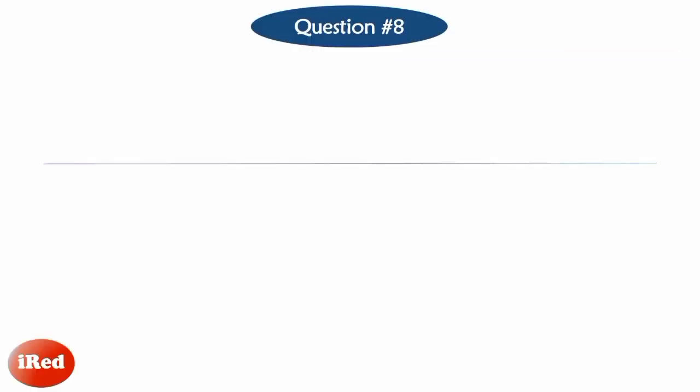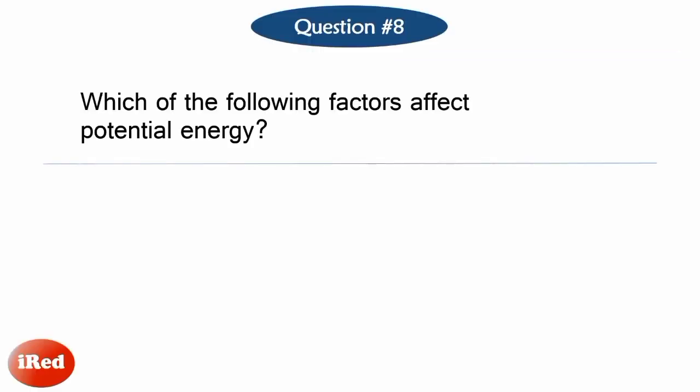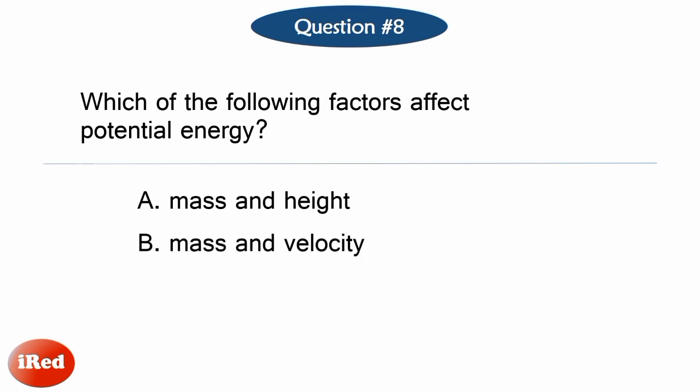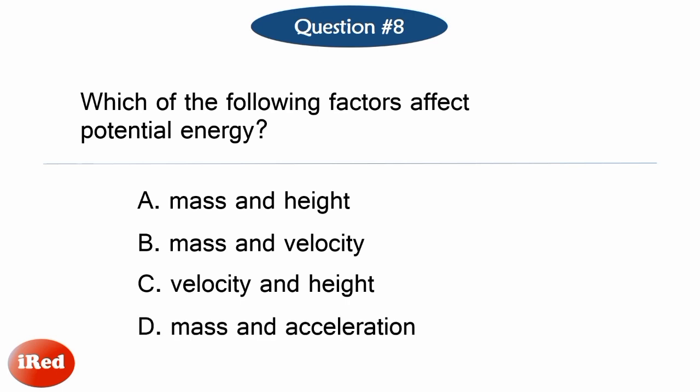Number 8. Which of the following factors affect potential energy? Letter A, mass and height. Letter B, mass and velocity. Letter C, velocity and height. Or Letter D, mass and acceleration.